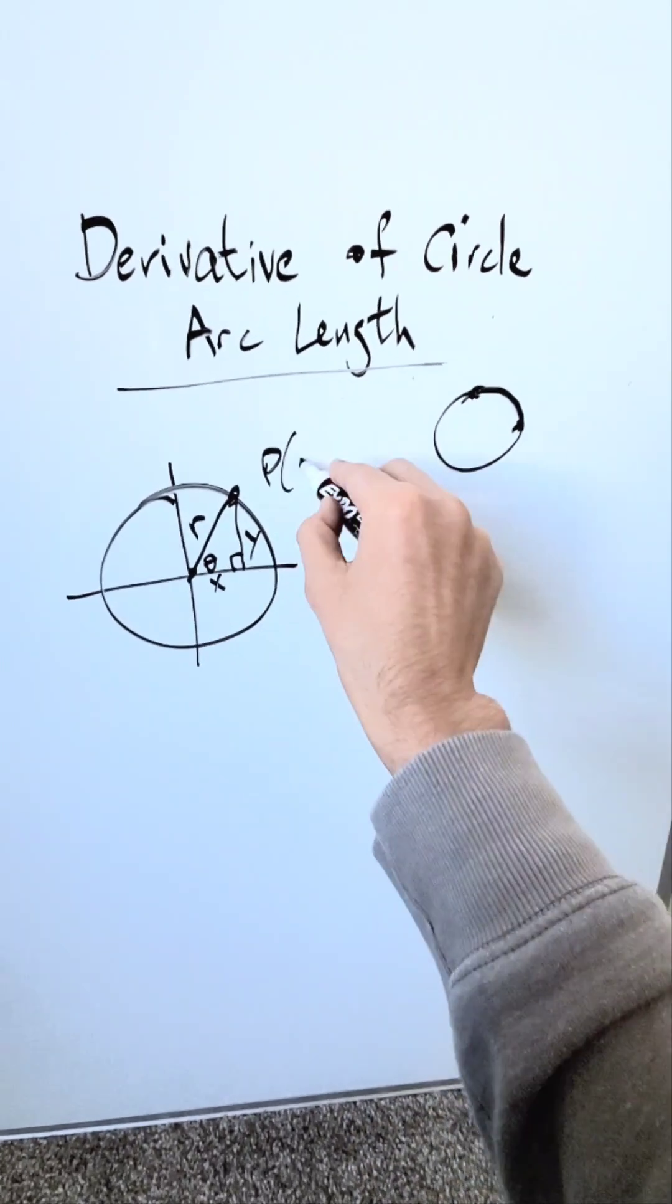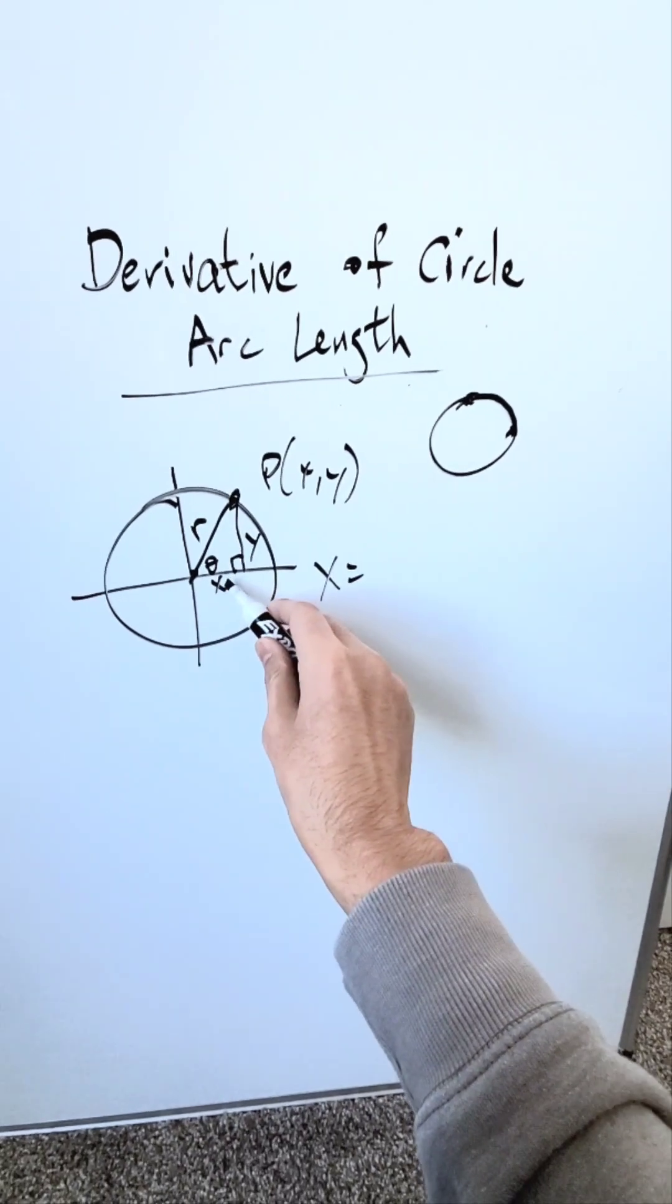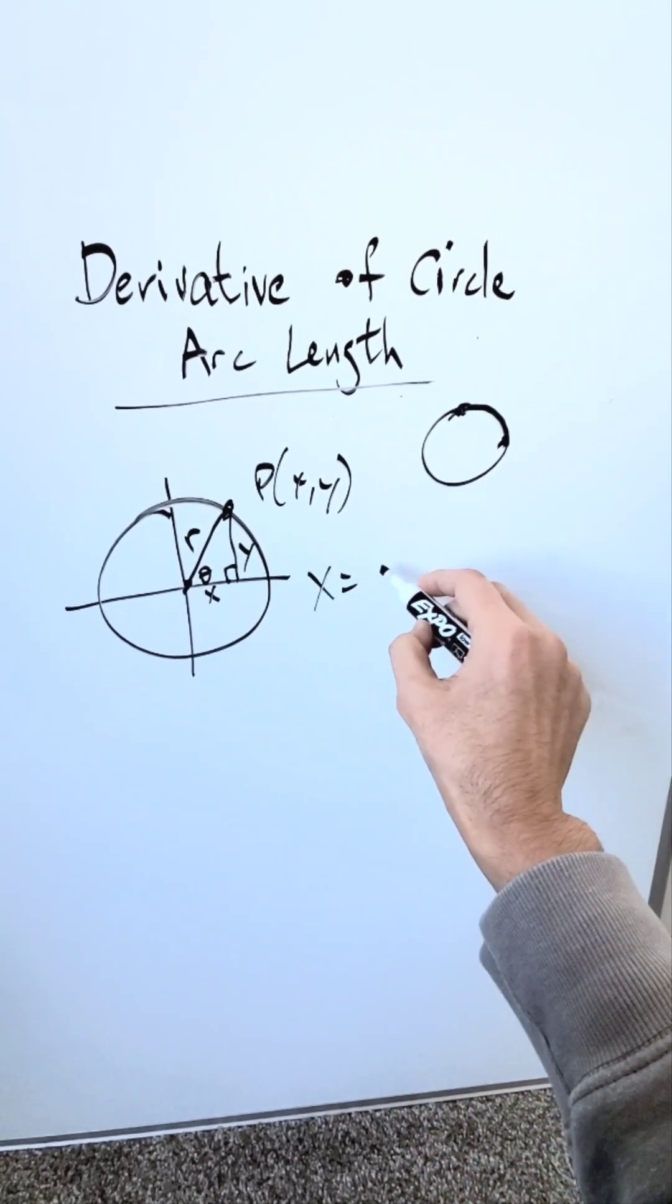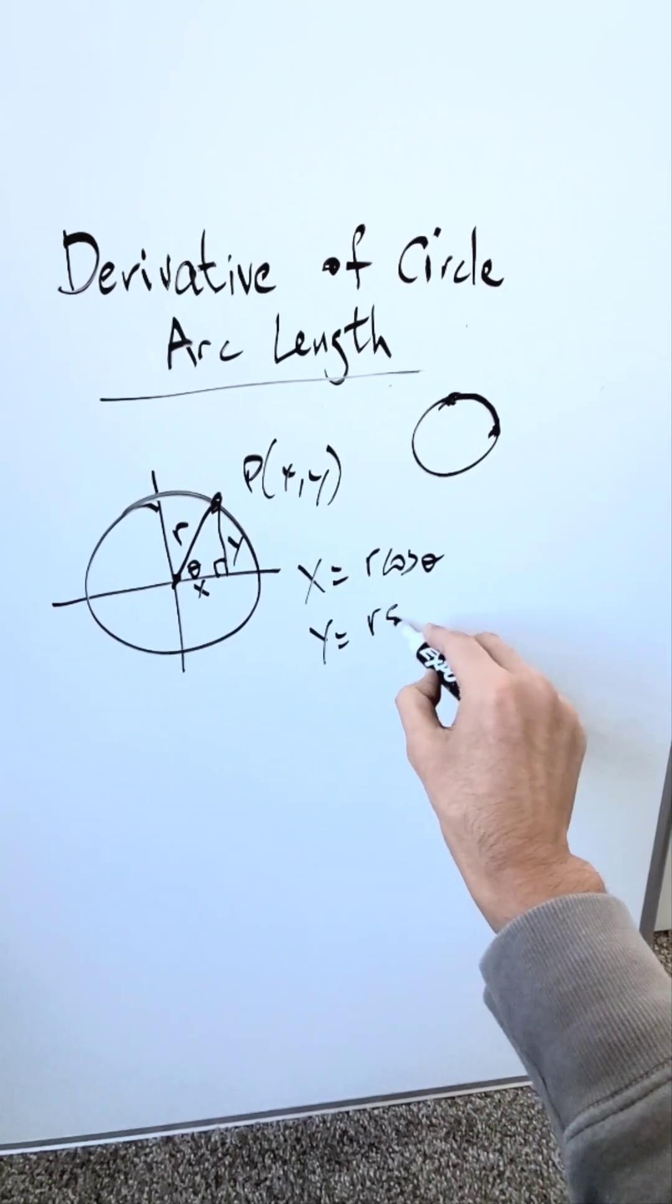I can define parametric equations for that point with x and y values. Using right triangle trigonometry, cosine θ equals x/r, so x equals r cos θ. Likewise for y, I have r sin θ.